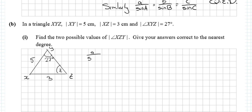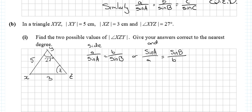We'll use either a/sin A = b/sin B, or sin A/a = sin B/b. If you want a side use the first form; if you want an angle use the second. We want an angle, so we use: sin Z / its opposite side (5) = sin 27° / its opposite side (3).